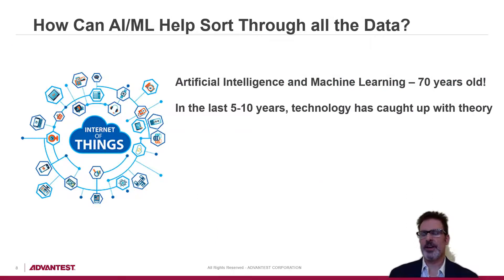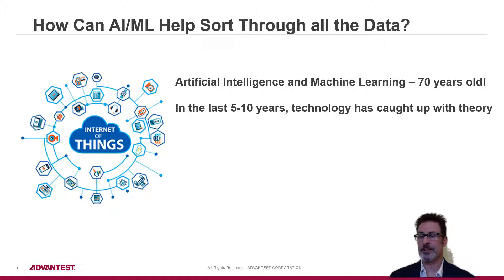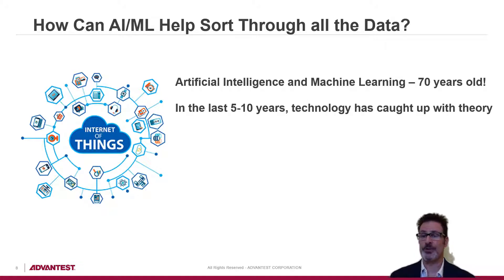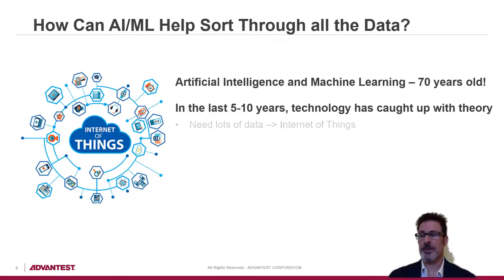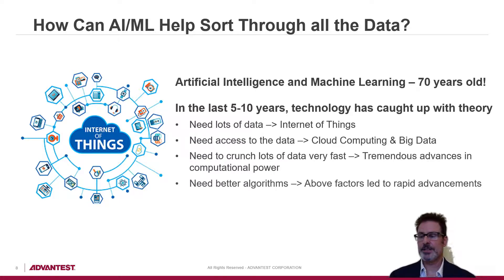With all this data, we've looked at how artificial intelligence and machine learning can help sort through the massive amounts of data being collected. We hear a lot about AI and ML, especially in the last five to ten years, but artificial intelligence and machine learning are 70-year-old concepts developed back in 1950 by Alan Turing. For most of that time, these technologies had been relegated to niche applications because the technology just had not caught up with the theory. But that's changed a lot in the past five to ten years.